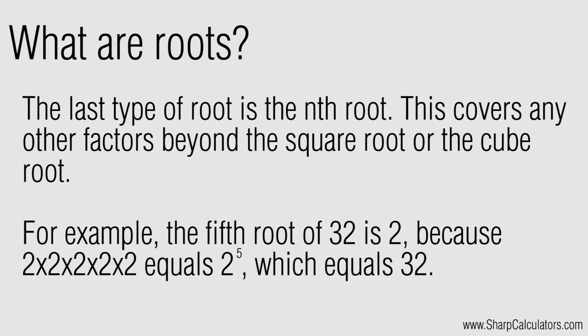The last type of root is the nth root. This covers any roots beyond the square root or the cube root. For example, the fifth root of 32 is 2, because 2 multiplied by itself 5 times equals 32.